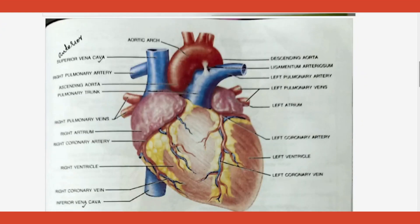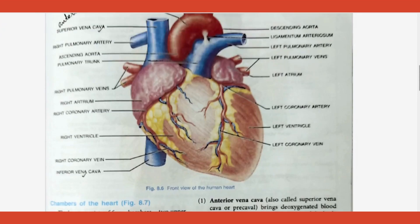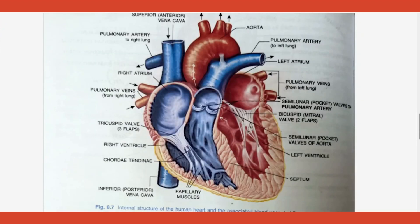Coming to the structure of the heart, we will take that up with the next diagram. There are four chambers of the heart. The upper chambers — one is called atrium and there is another chamber also called atrium. So both of them are atriums.